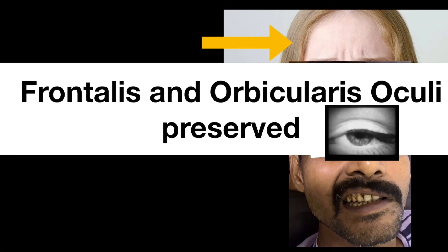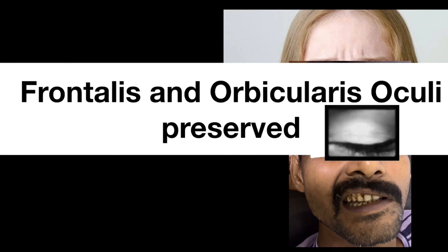The patient can frown his forehead and close his eyes. These features help us to differentiate it from the lower motor neuron type of facial palsy. I hope it was interesting. Thank you.